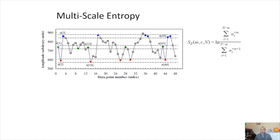Multiscale entropy assesses the regularity of the signals, and it's done over multiple scales. How regularity is assessed is by using something called sample entropy. Sample entropy assesses the relationship and the consecutive ordering of the data.